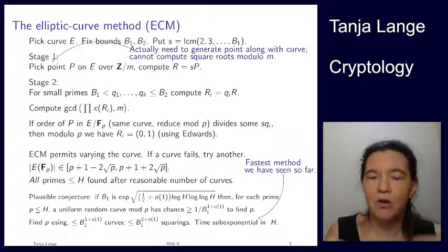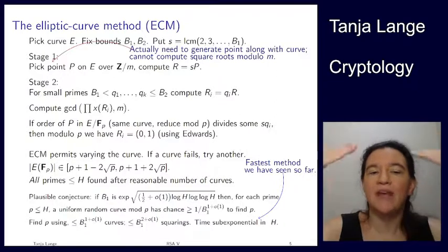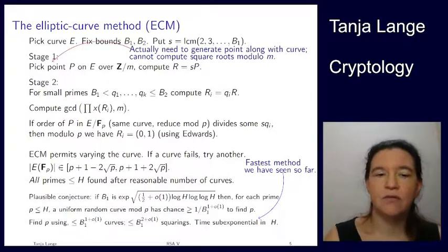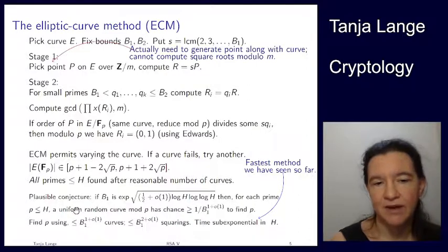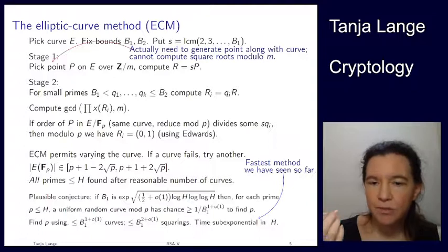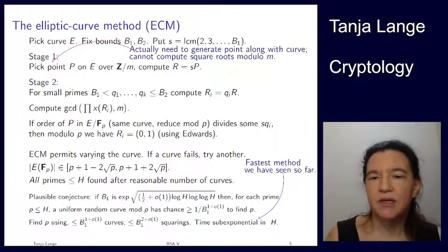Of all the methods, this is the fastest we have seen so far. ECM is sub-exponential in h. For the p+1 or p-1 methods, I don't have this flexibility of varying the curve. Pollard's rho method was exponential — or rather square-root time — and ECM is sub-exponential. ECM is the first method we're seeing with a sub-exponential analysis.